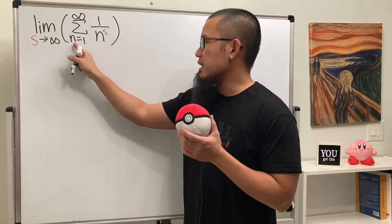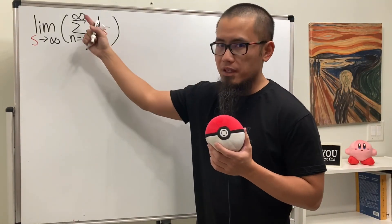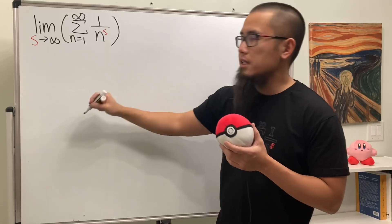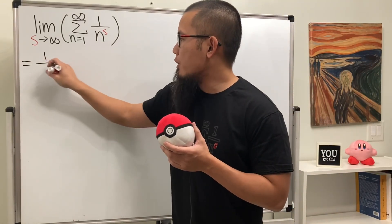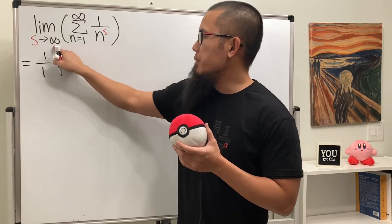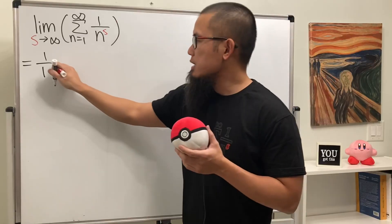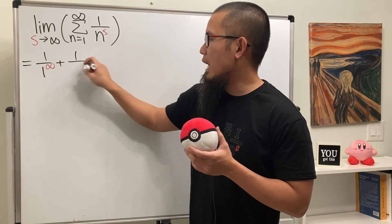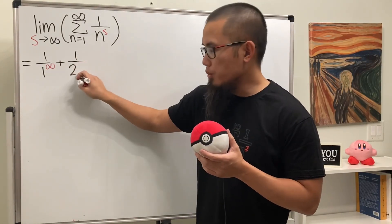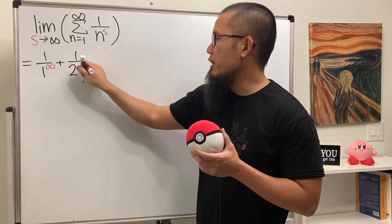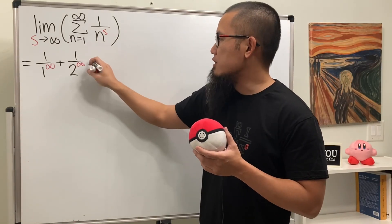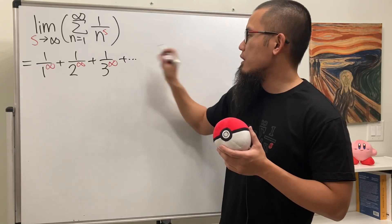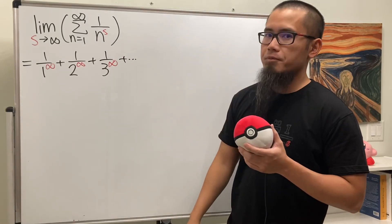First, we see that we have a series as n goes from 1 to infinity. So we can just plug in 1 into the n first. So we get 1 over 1. And because s is going to infinity, we continue. We will have 1 over 2 to the infinity, and then 1 over 3 to the infinity, and so on.